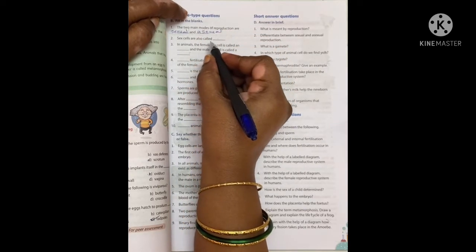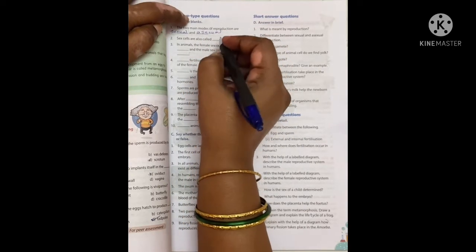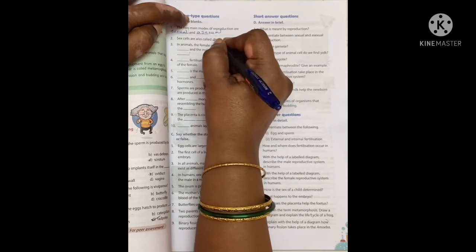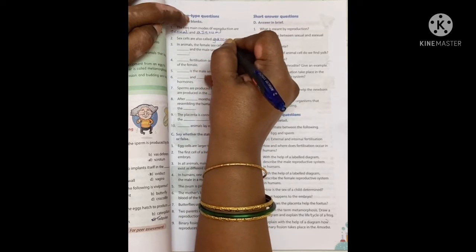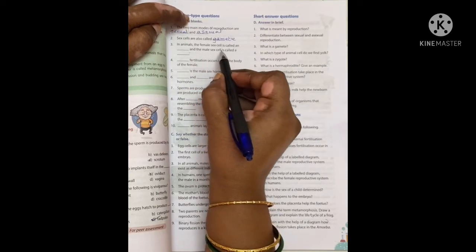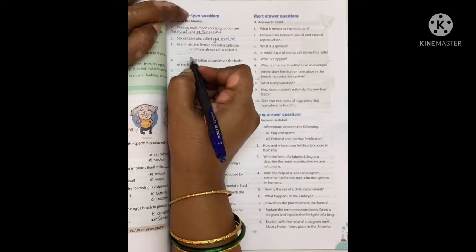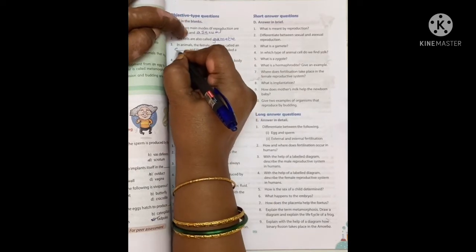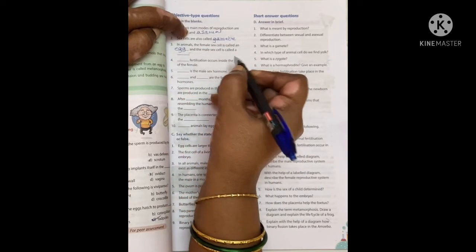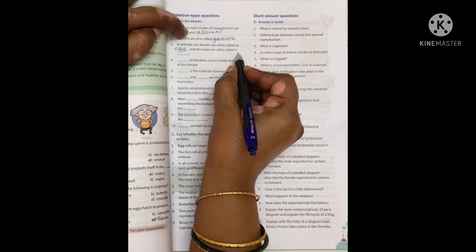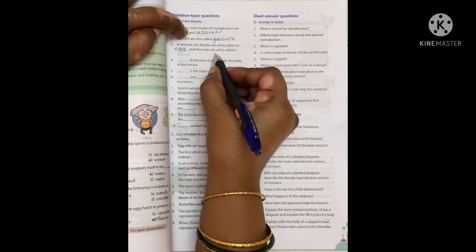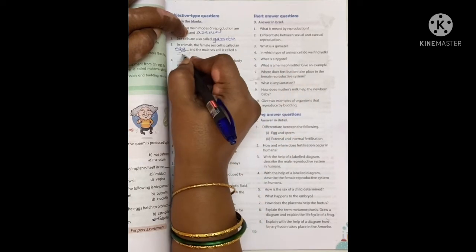Sex cells are also called gametes. In animals, the female sex cells are called an egg, and the male sex cells are called sperm.